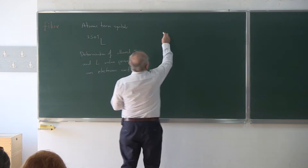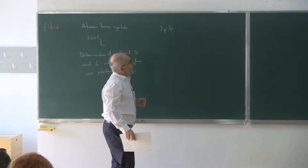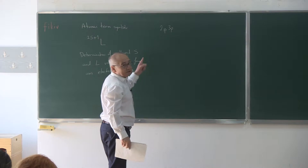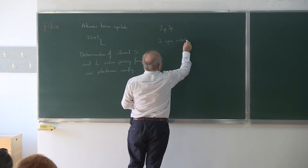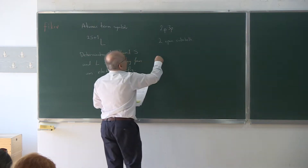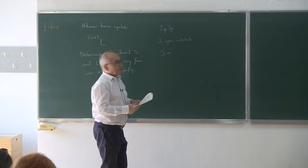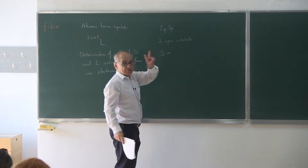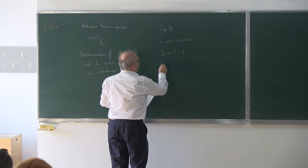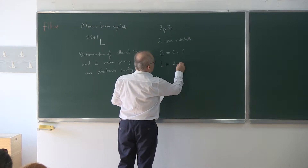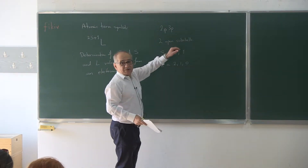The last example we had done was the 2p 3p part of an atomic electron configuration, where there are two open subshells. We obtained the result that the total spin quantum number from such a configuration, which contains just two electrons, has possible values of S equal to 0 and 1, and possible values of L are 2, 1, and 0.